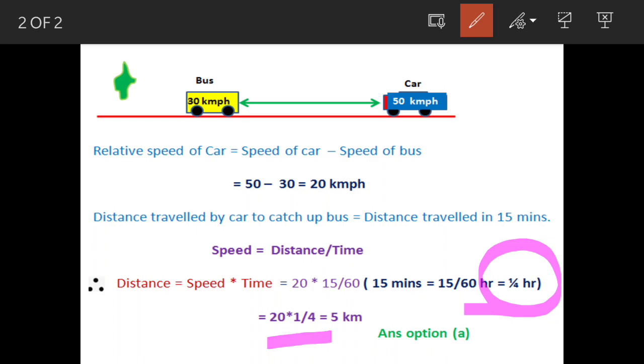Option A is the answer. That means the distance between the car and bus was 5 kilometers. Hope it is clear. Thank you and thanks for watching.